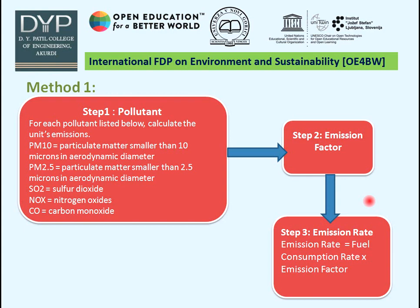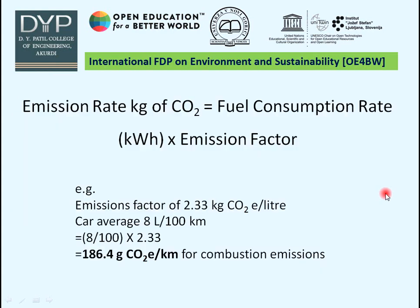Method 1 is used to calculate the emission rate. The first step is to calculate the emission for individual pollutants: PM2.5 particulate matter, PM10, SOx, NOx, and CO. Then by using the emission factor, we calculate the emission rate, which equals fuel consumption rate multiplied by emission factor. This is the formula to calculate CO2 emission.